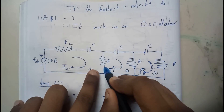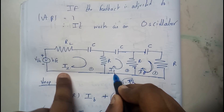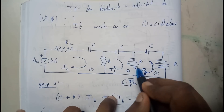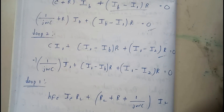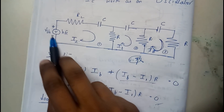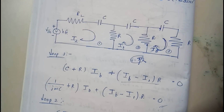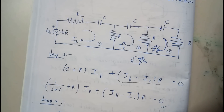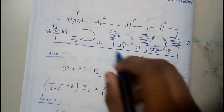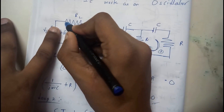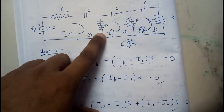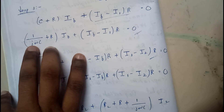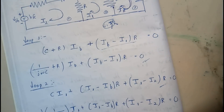For loop 2, starting from the same point: R(i1 − i2), then the capacitor term C·i1, then R(i1 − ib), substituting C = 1/jwC. For loop 3: i2·RL, then the capacitor term C·i2, then R(i2 − i1). We are done with writing all three loop equations.